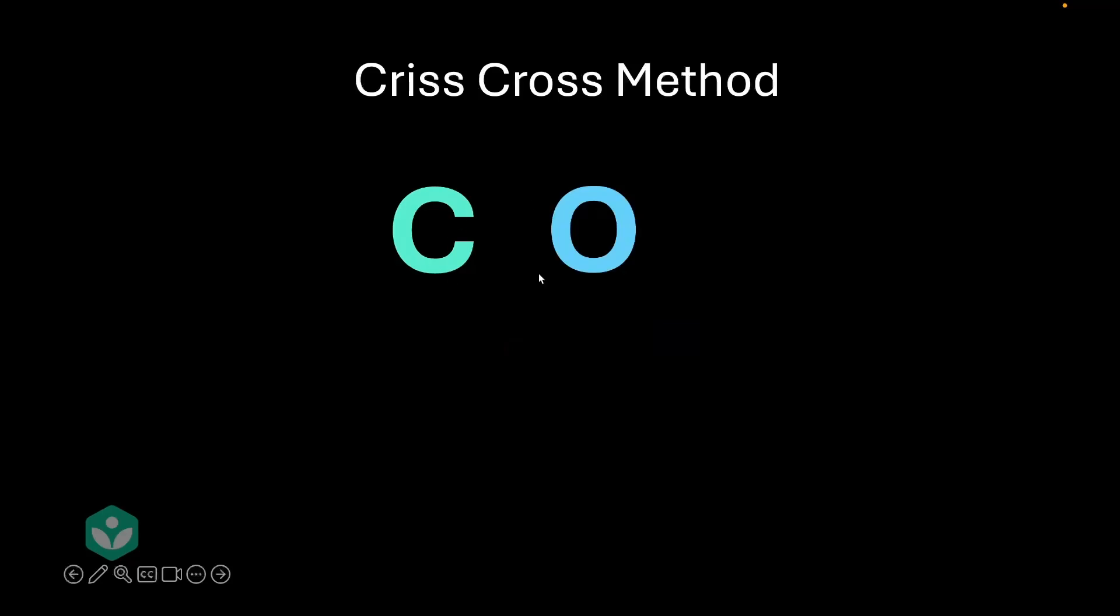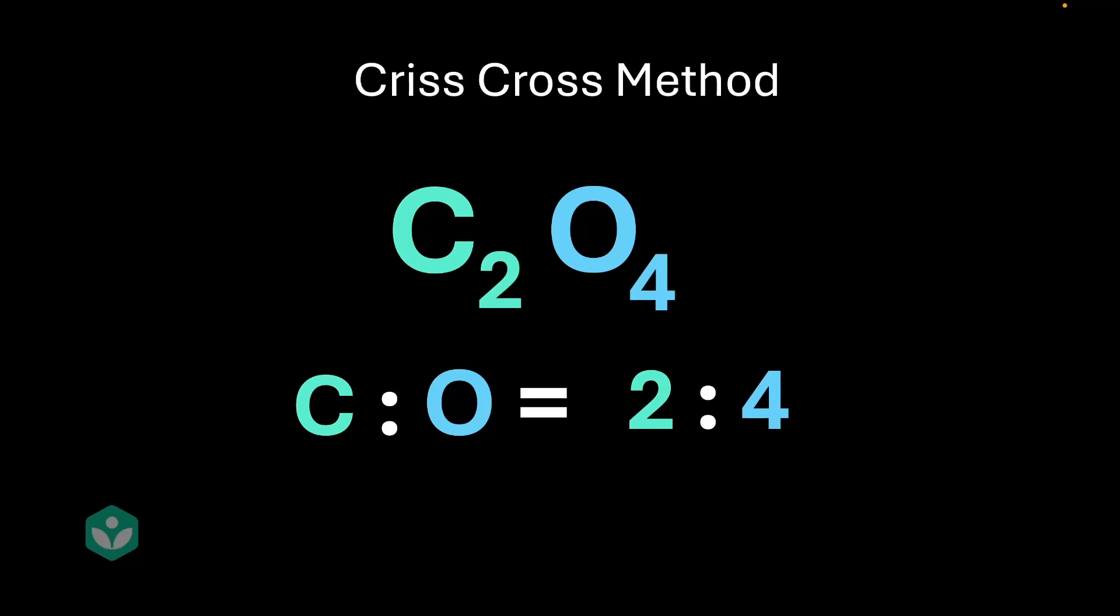Let's move on to our next example. Carbon and oxygen. Valencies, 4 and 2. Cross multiply, and we end up with C2O4. Great. So, for every two carbon atoms, we have four oxygen atoms. Wait a minute. Again, is there scope for some cancellation? Can we bring this ratio down to the lowest integer ratio? Well, of course we can.